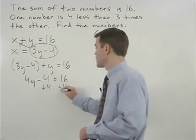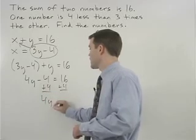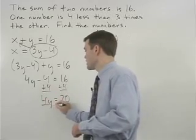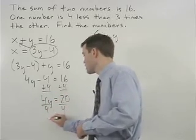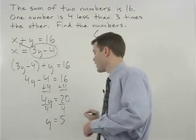Add four to both sides. Four y equals twenty. Divide both sides by four and y equals five.